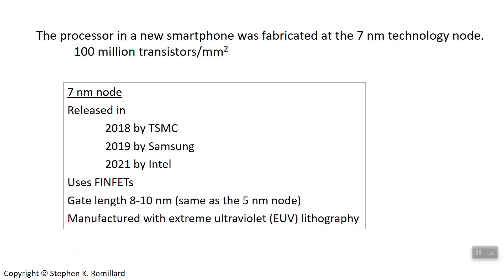If you have a new smartphone, it contains a microprocessor fabricated with the 7 nanometer technology node, which means it has about 100 million transistors per square millimeter. It was released in 2018 by TSMC, a Taiwanese foundry and the largest foundry in the world — and the author of our textbook was its chief technology officer before going to Berkeley. In 2019, it was also released by Samsung, and Intel is presently working on it. It uses FinFETs, which we'll discuss later.